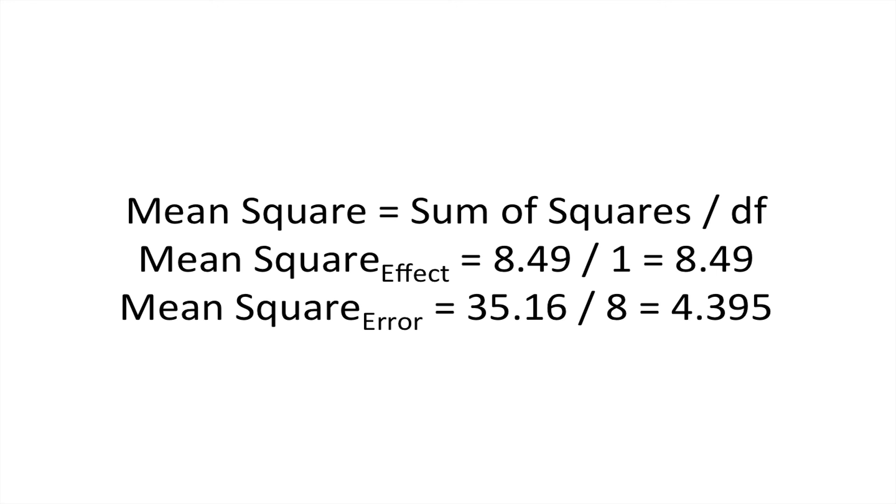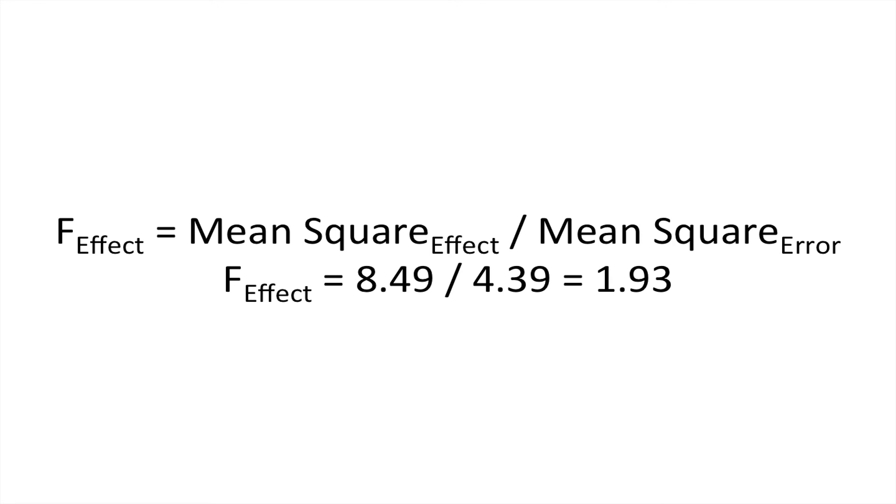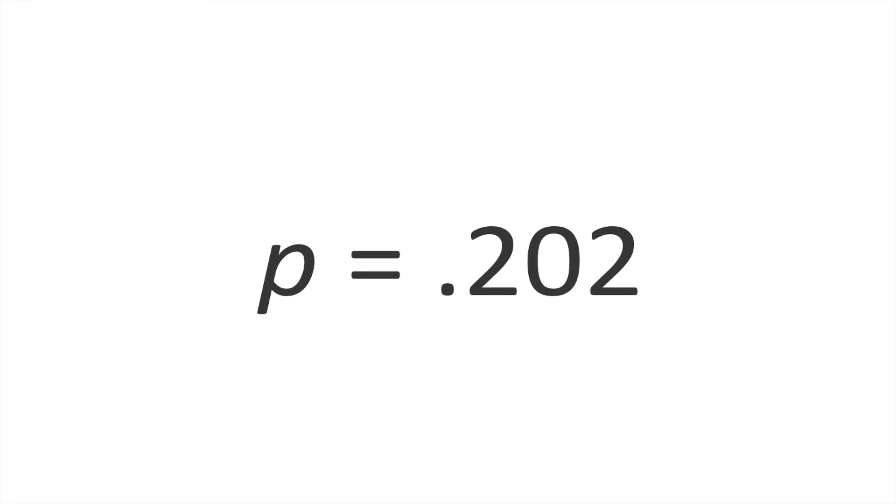To calculate the significance, we need an F statistic, which is the variability due to our effect divided by the variability due to error. We get an F statistic of 1.93. If we look that up in an F significance table, we see that we get a p-value of 0.202, which is not significant. So we can say that for the two groups, the variability within the groups is not significantly different.